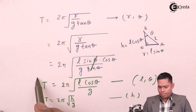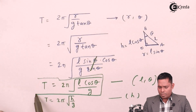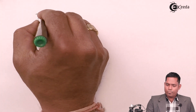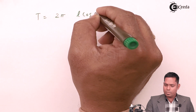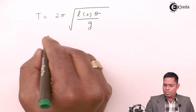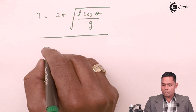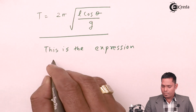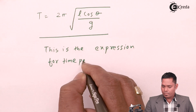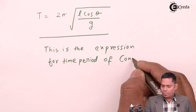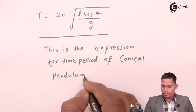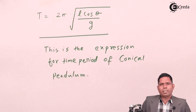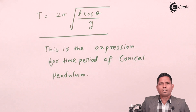The most commonly used expression for the time period of a conical pendulum is T = 2π√(L cos θ / g), since the length of the string is usually given. This is the final expression for the time period of a conical pendulum. Thank you for watching. In the next video, we will discuss how to find the tension.